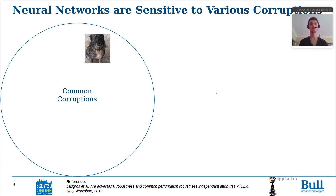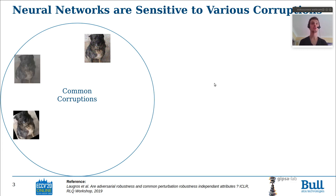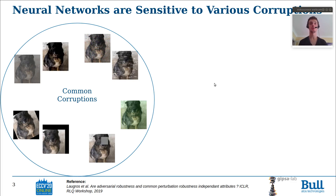It can be noises, contrast loss, rotation and color distortion. There are a lot of kinds of common corruptions.